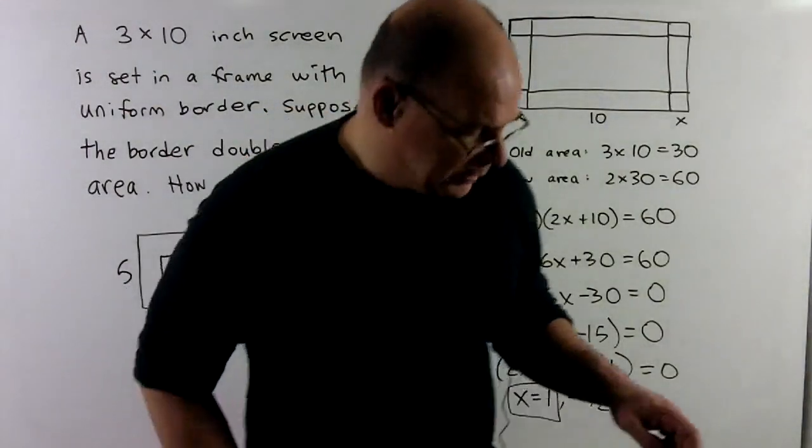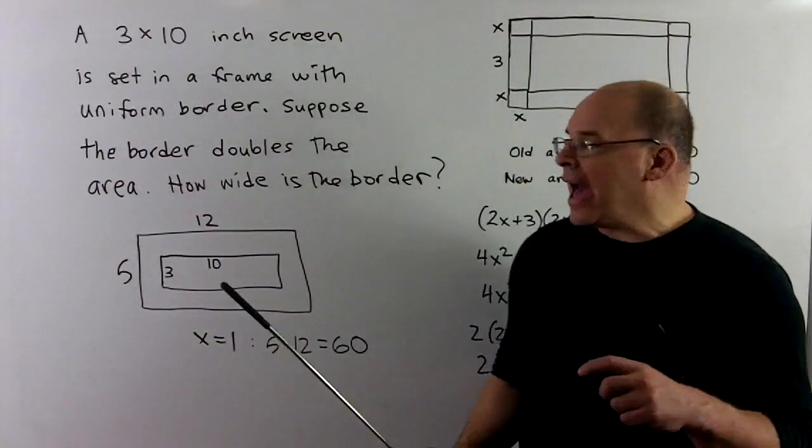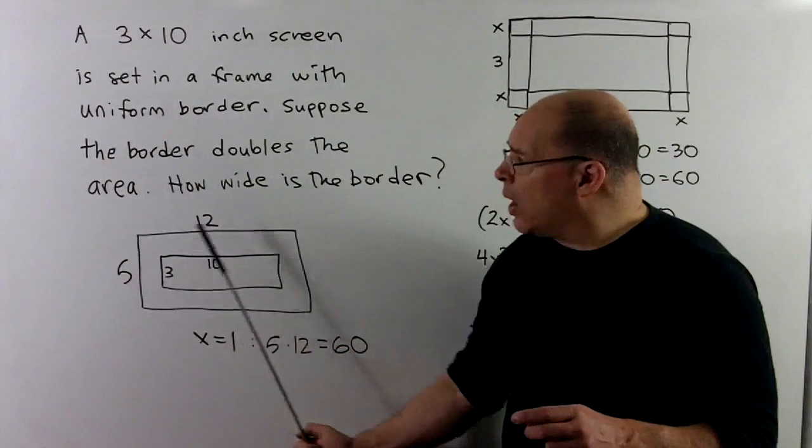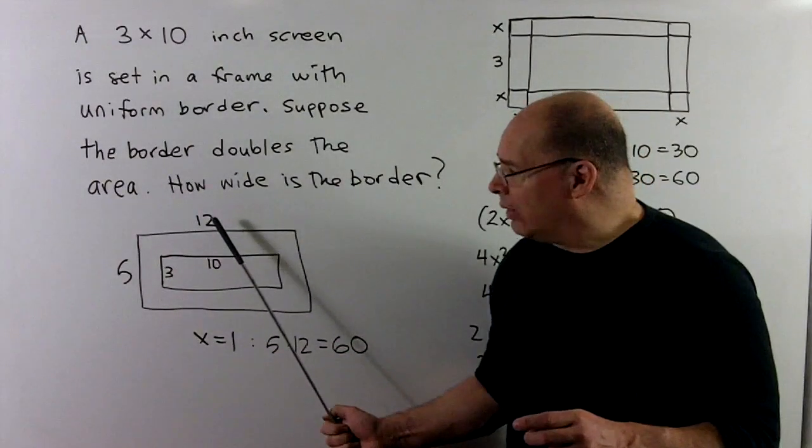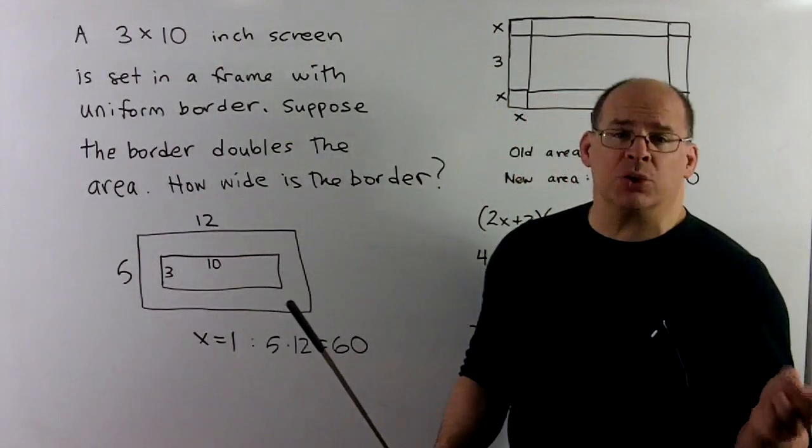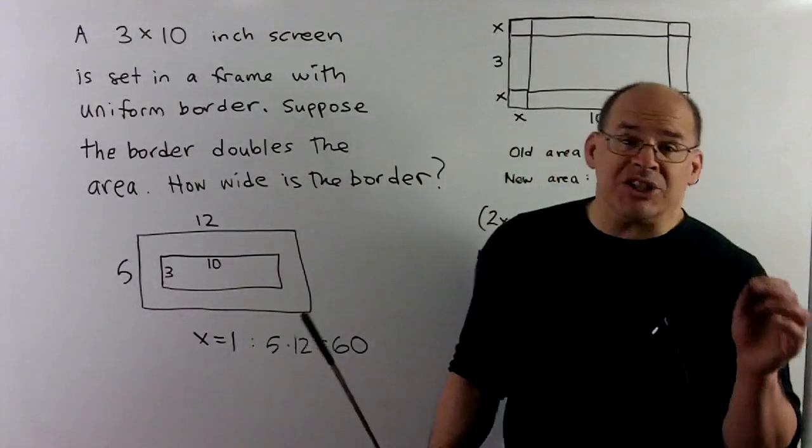Now, if we go back to this picture, if we put that 1 in for X, what we'll get, the new vertical is going to be a 5, the new horizontal is going to be a 12. What do we get? 5 times 12 is 60, which is twice the 30 that was the original area. So that checks out.